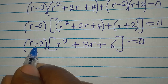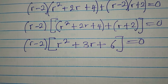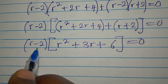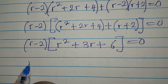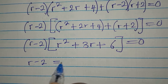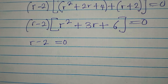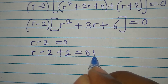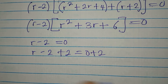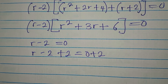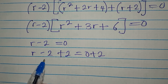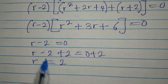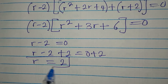We are multiplying two factors to get zero, so either factor must equal zero. Either r minus 2 equals zero, or the quadratic equals zero. From r minus 2 equals zero, we add 2 to both sides using the additive inverse of minus 2, giving us r equals 2. This is one of the solutions.